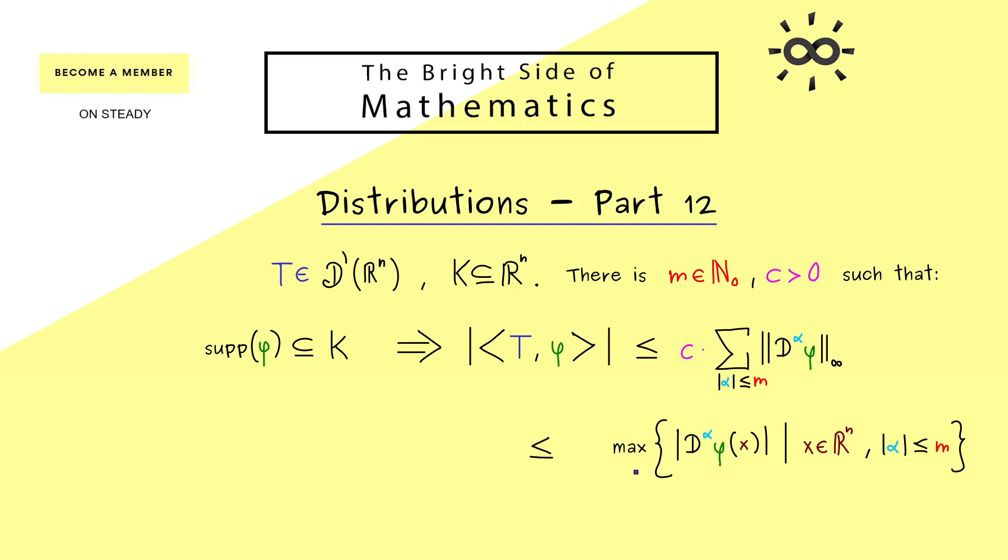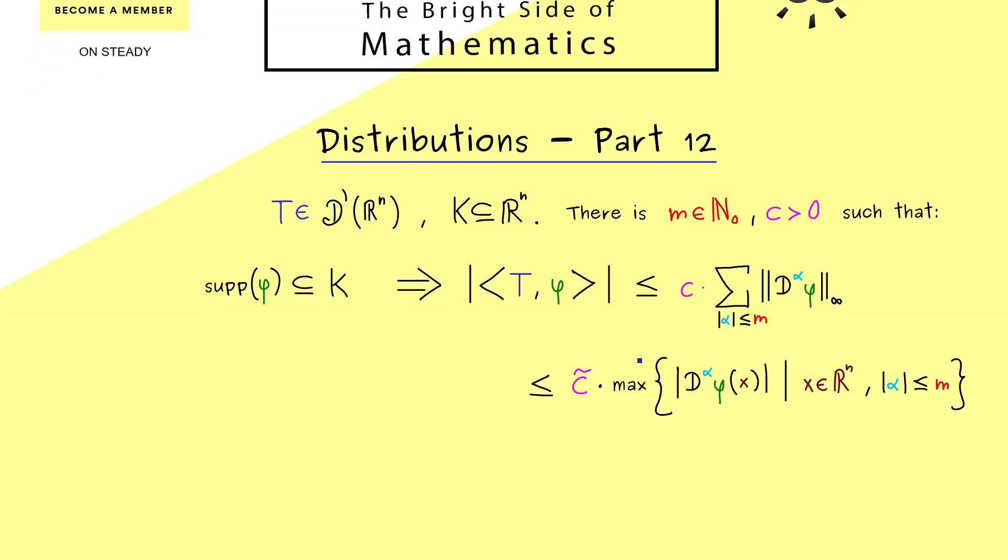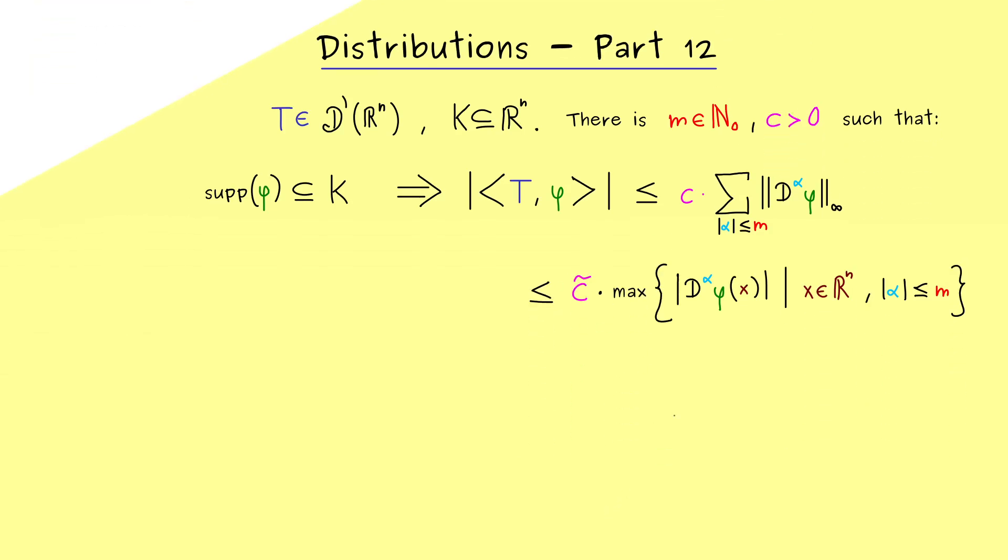Of course we can do that and still keep the estimate here by just multiplying that with the correct factor. In other words we will just change the constant here. Hence instead of c we just write c tilde.